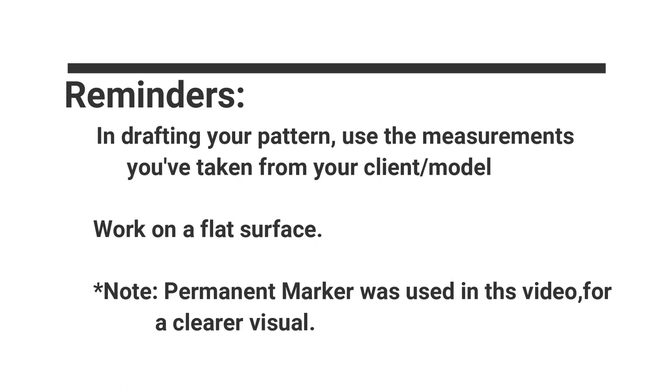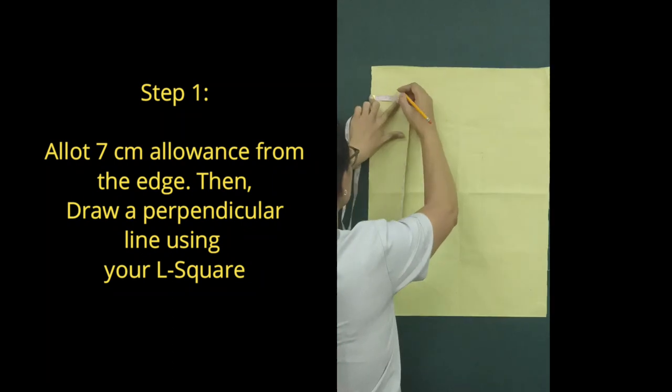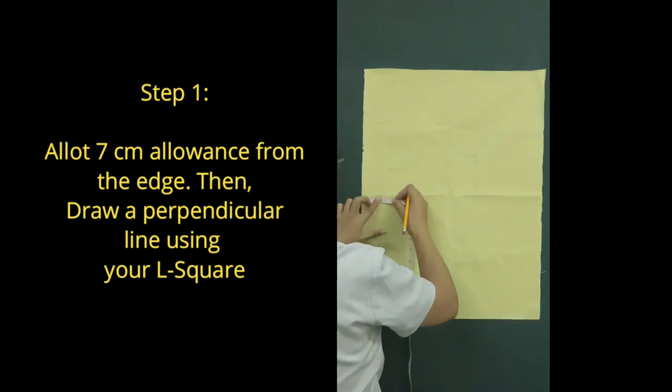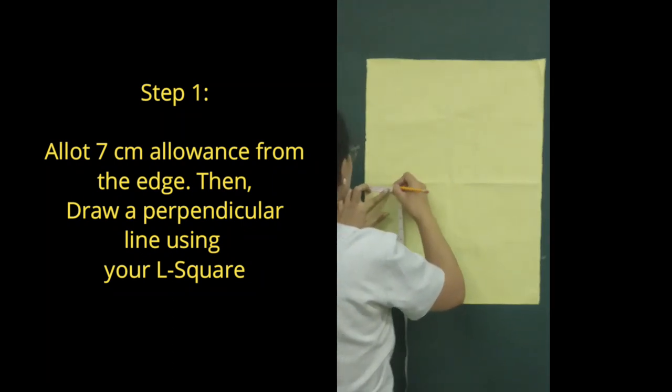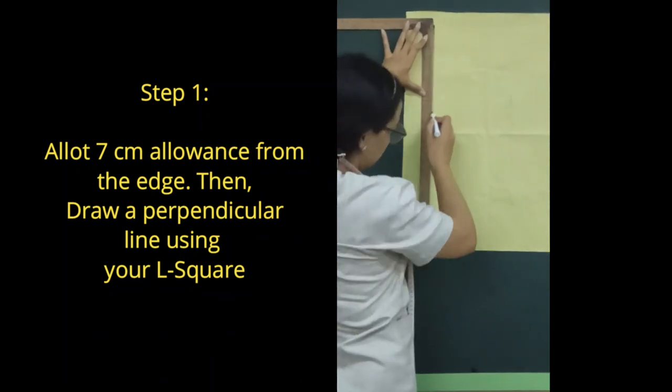Work on a flat surface. Step 1: Allot 7 cm allowance from the edge. Then draw a perpendicular line using L-Square.